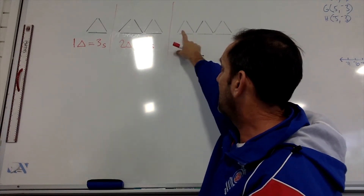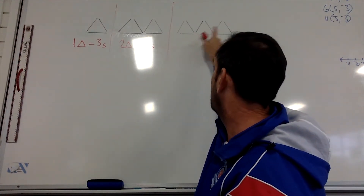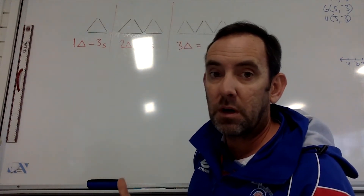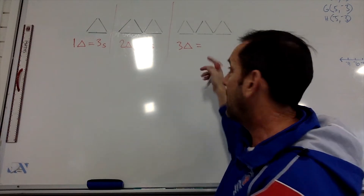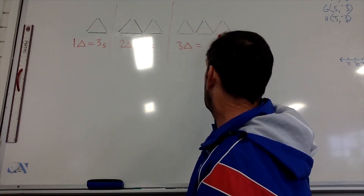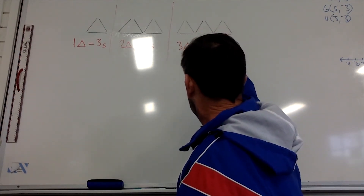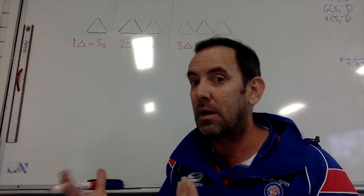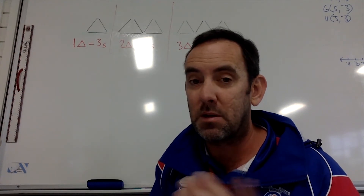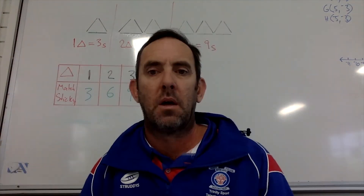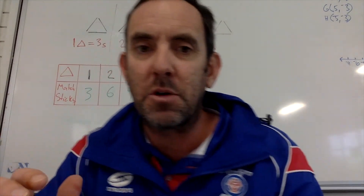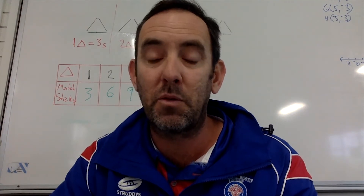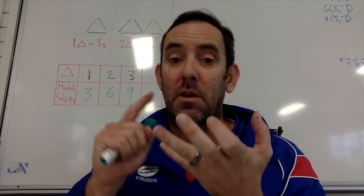The next one — we've got three triangles, and that's going to equal nine matchsticks. So we're just looking at the relationship between how many matchsticks there are and how many triangles there are. Now we want to try and establish a pattern between this relationship between our two variables, which are the number of triangles and the number of matchsticks.